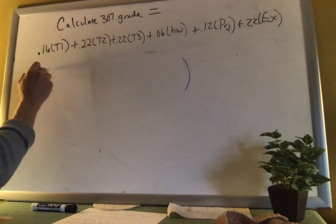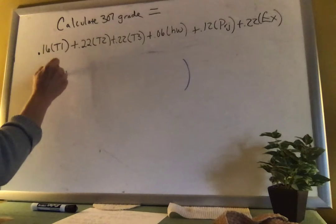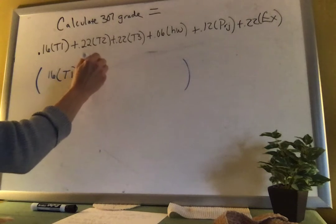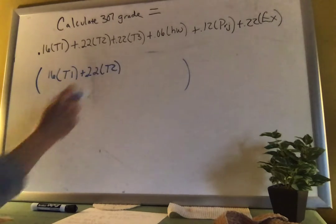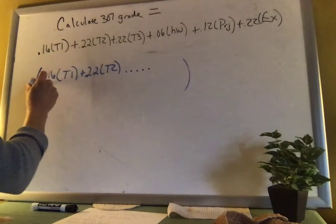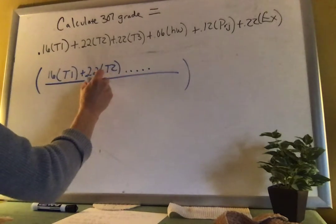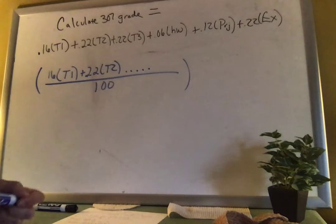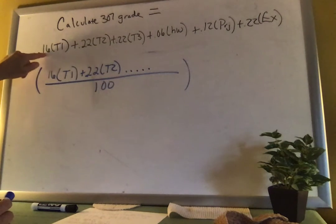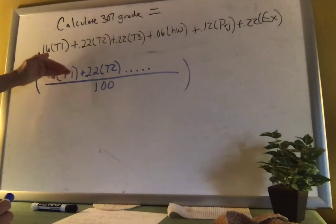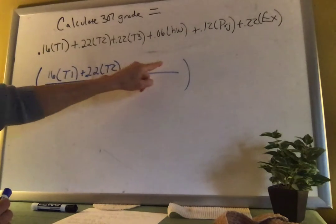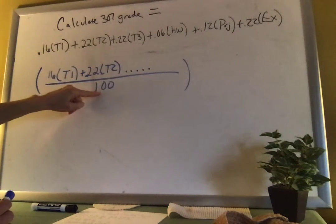So instead of saying test one is 16 points, test two is 22 points, et cetera, and then dividing by the total number of points, because that's really what I'm doing, 16 divided by a hundred, there's that 16%, that 0.16. But if it's messing with you that I don't have a fraction, I really do, I would have done it as points divided by a hundred points.